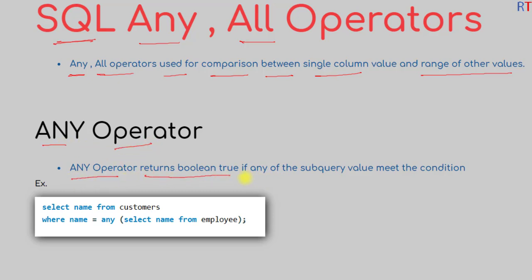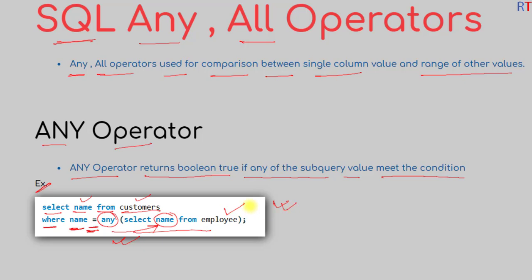The ANY operator returns boolean true if any of the subquery values meet the condition. For example, we have the query: SELECT name FROM customers WHERE the name is equal to ANY along with a subquery. The subquery returns names from the employee table, so the condition is true if the customer name matches any name in that range.